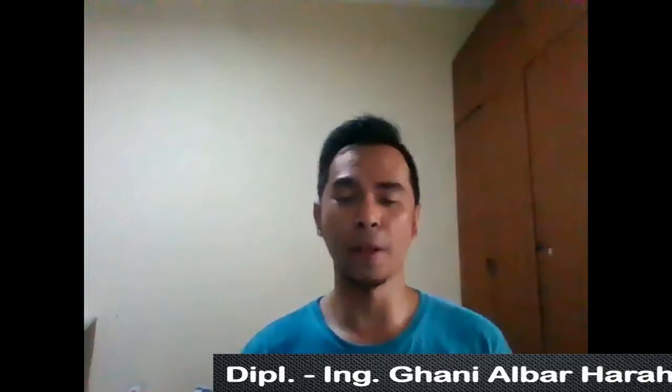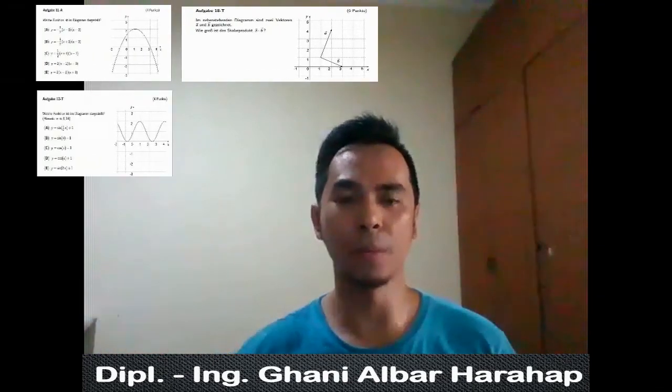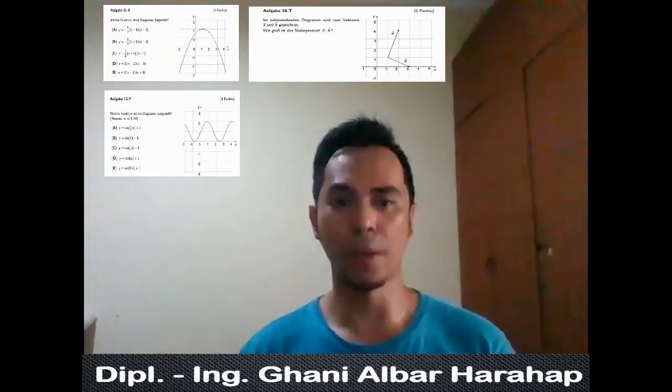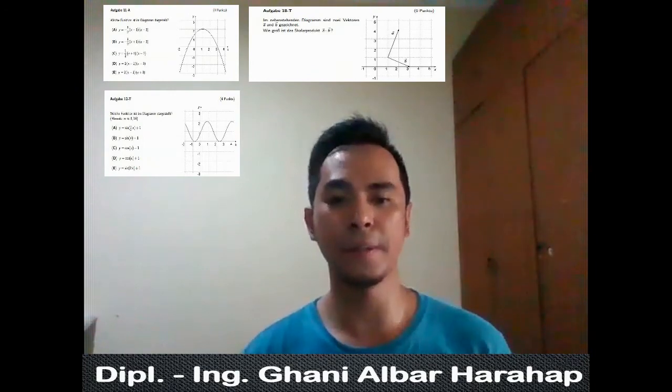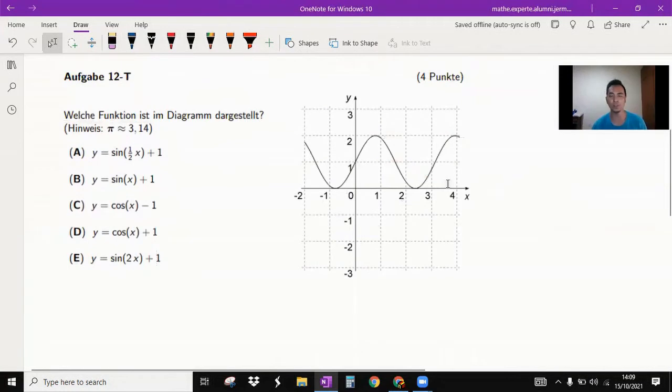Well hello everybody, welcome back to my channel. Today we'll discuss number proofs from Kaiser Sloton from 2007. Let's do this. Question number 12 - we got a trigonometric curve here, so we have to define which function belongs to this curve. The idea is to drag this curve one step down by subtracting minus one from this function.